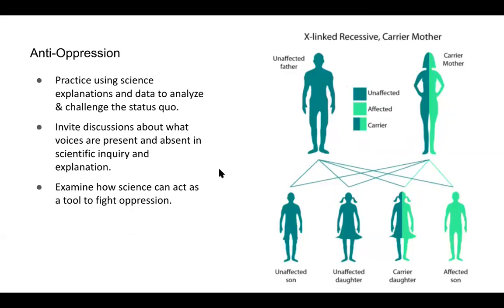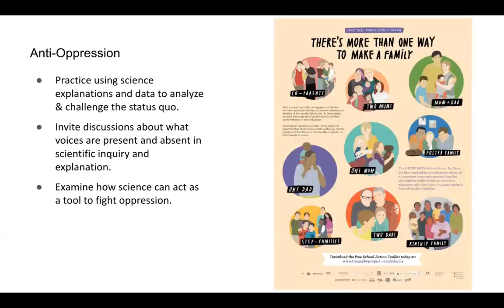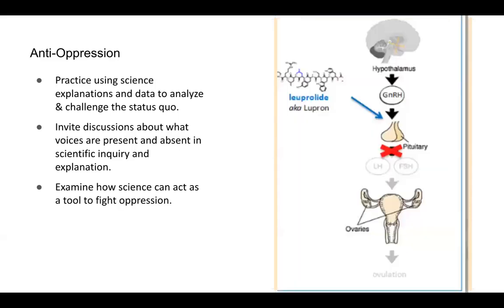Anti-oppression is an important but very difficult aspect of the gender-inclusive biology framework. We need to practice using science explanations and data to analyze and challenge the status quo. For example, consider this X-linked recessive inheritance chart — what messages are present in the way the silhouettes of the 'mother,' 'father,' 'daughters,' and 'sons' are given? We need to examine how science can be used as a tool to fight oppression. What's the difference between a biological family as one might see in a Punnett square and social concepts of family? This poster from the Gaby Baby Project shows there's more than one way to make a family, and we need to make sure students understand the difference between a family in the sense of DNA or genetics and the family they know at home.